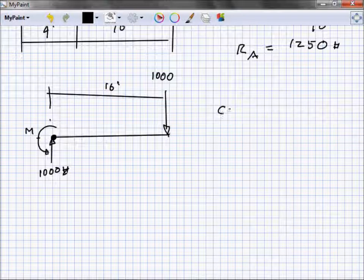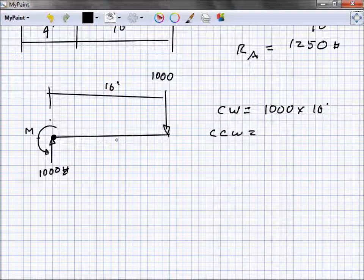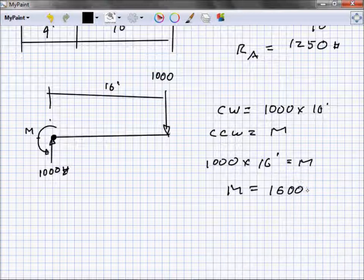We just sum it about that point. Clockwise equals counterclockwise. Clockwise is 1,000 times that 16 feet. Counterclockwise, there's only one thing - it's this little M arrow that we drew as our moment. Put them together, equal to 16,000.